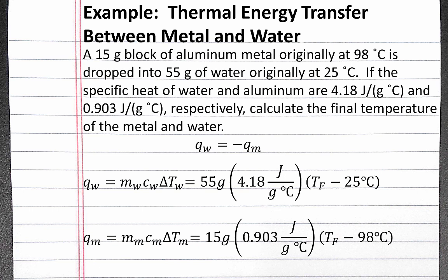For the metal, Q sub m equals the mass of the metal times the specific heat of the metal times the change in temperature for the metal.